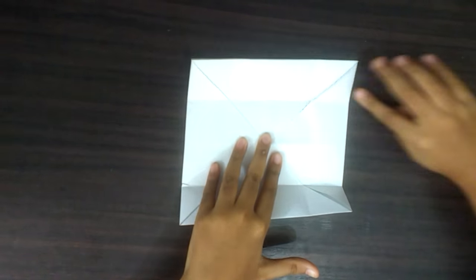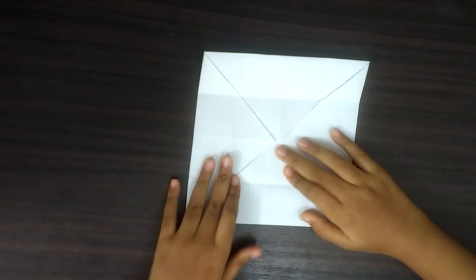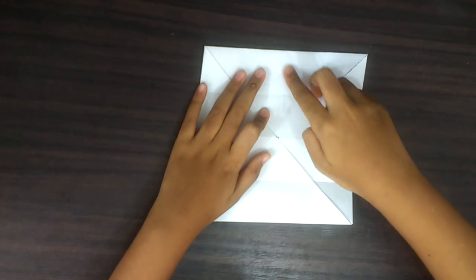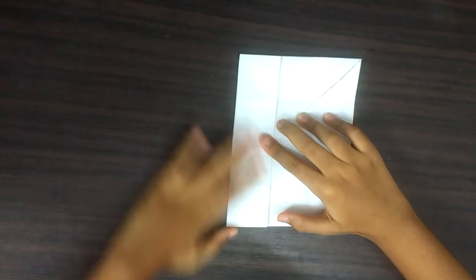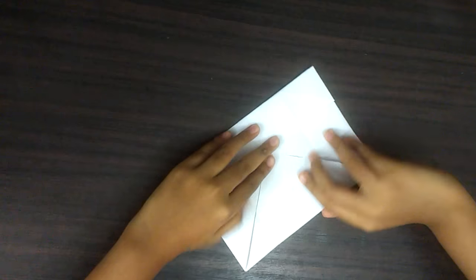Open it. Now, we will get two lines over here. Now, we have one more line over here. Fold the other side to that middle line. Do the same with the other side.